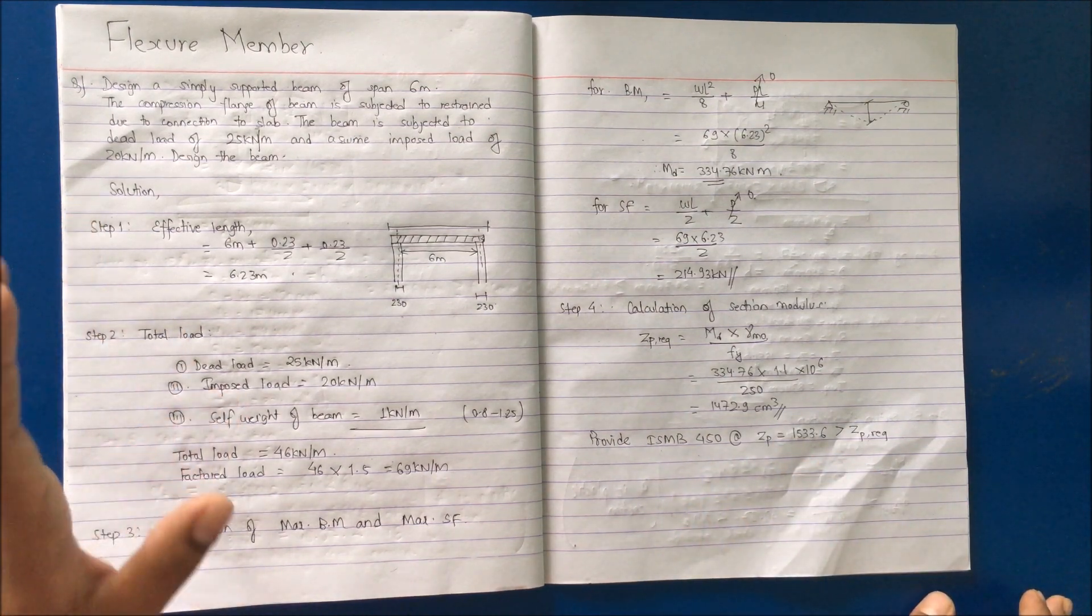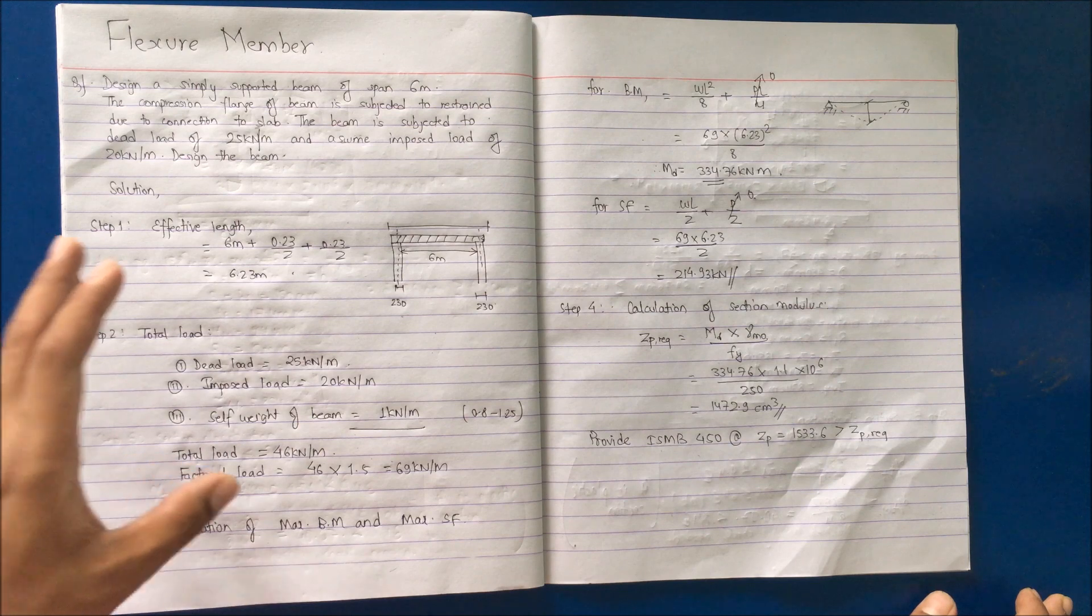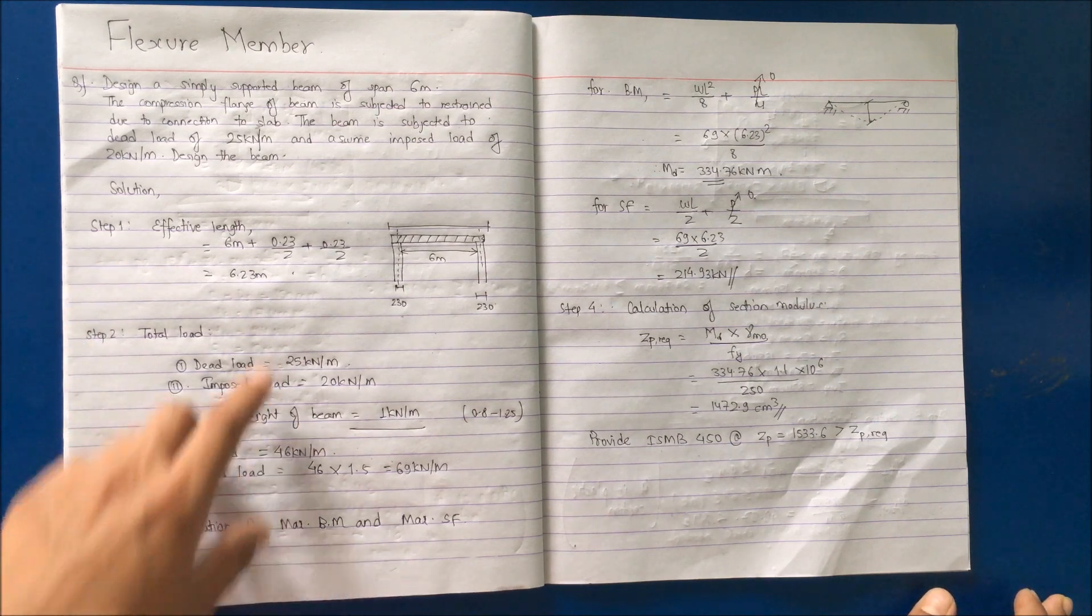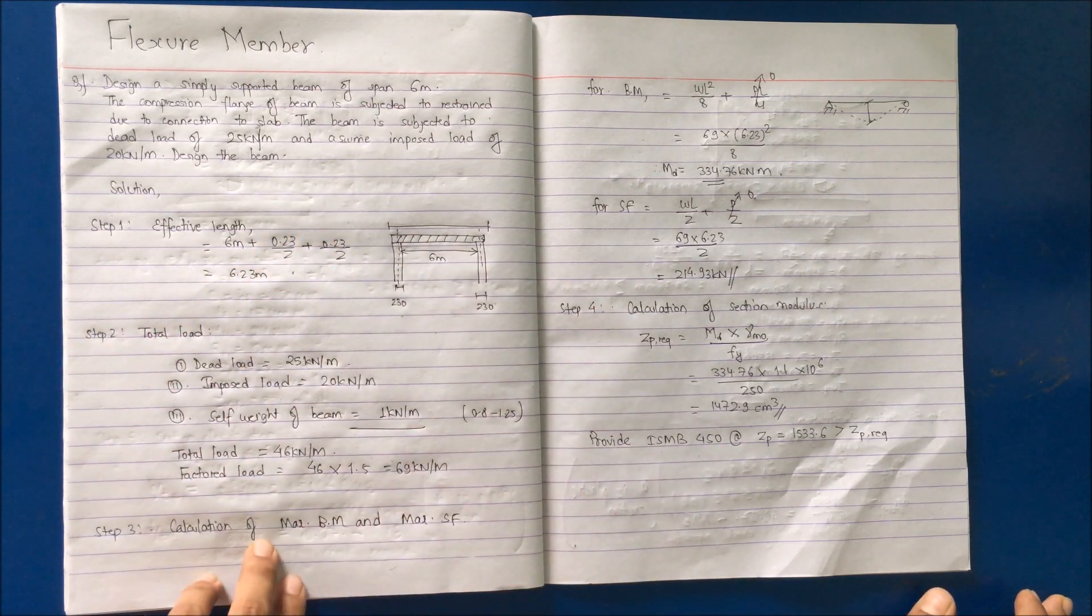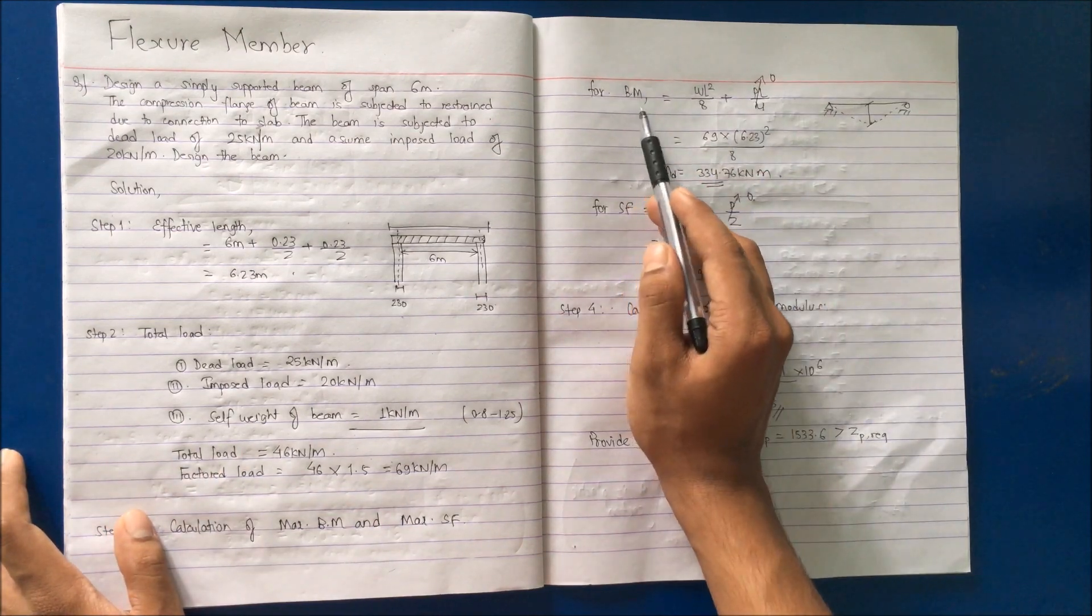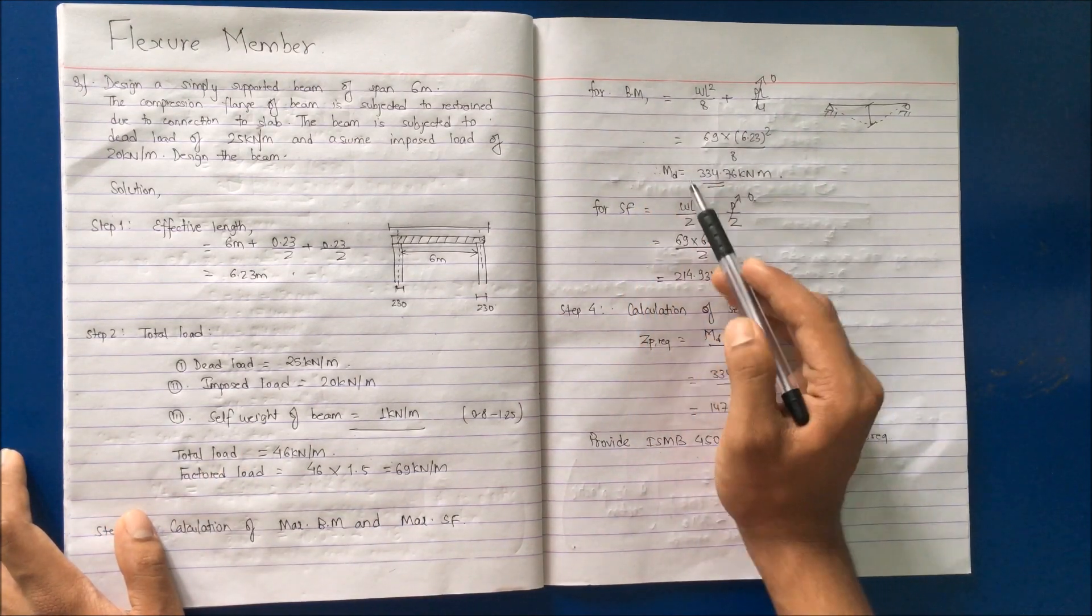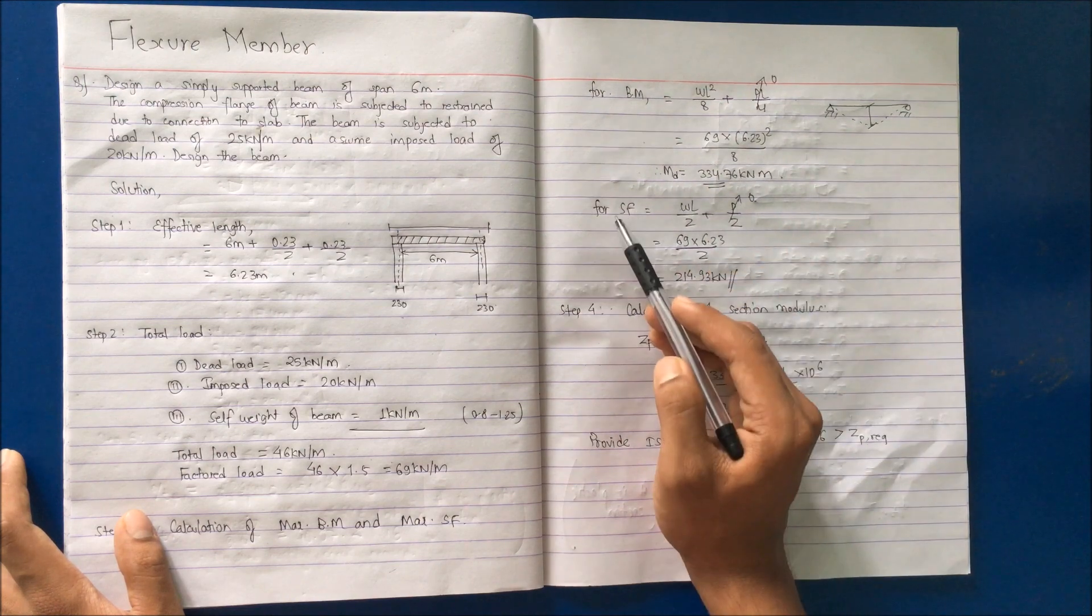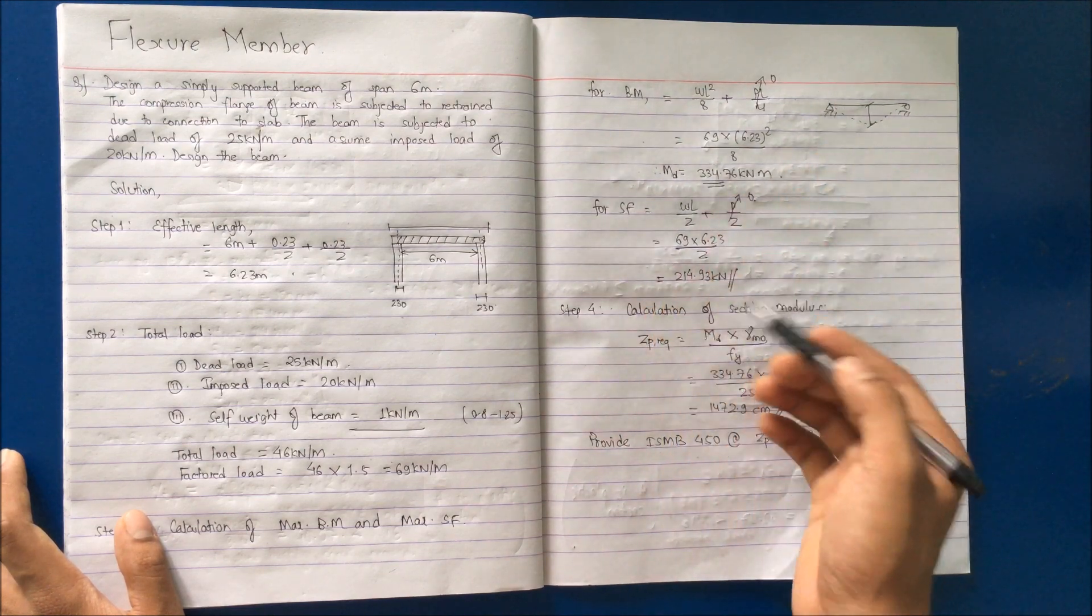The high shear case may occur due to point load application. If I provide a point load, we have to calculate the maximum bending moment with respect to UDL and point load, so the value of MD will be increased. Similarly, shear force will increase.